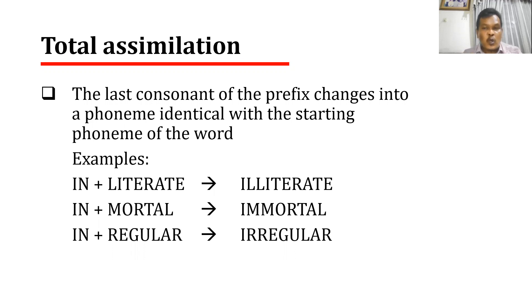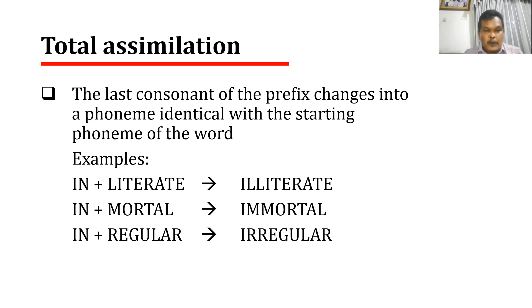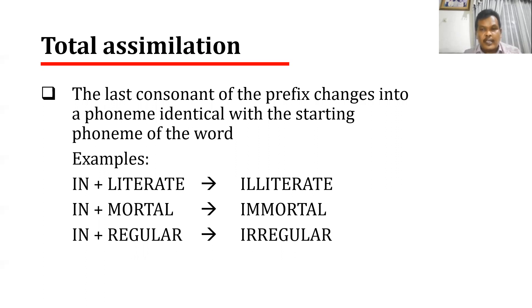Total assimilation is also called a gemination process because the result is a double consonant. So 'illiterate' becomes 'illiterate'. The same rule is also applicable when 'in-' is followed by 'mortal', giving 'immortal', and 'in-' plus 'regular' gives 'irregular'. This is total assimilation: the last consonant of the prefix changes into a phoneme identical with the starting phoneme of the next word.